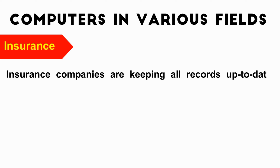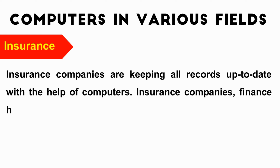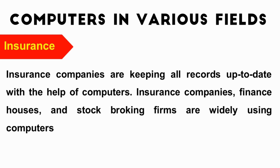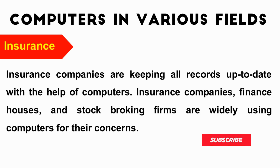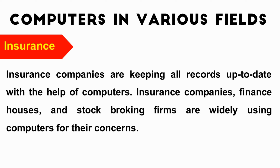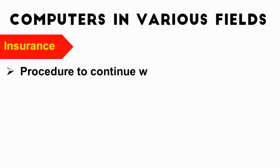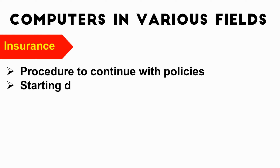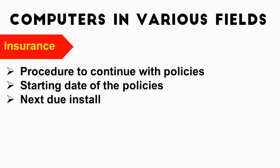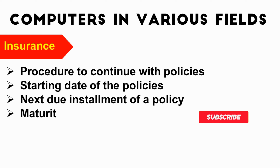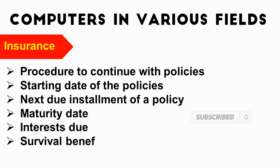Insurance companies are keeping all records up to date with the help of computers. Finance houses and stock-broking firms are widely using computers for their concerns. Insurance companies are maintaining a database of all clients with information showing procedure to continue with policies, starting date of the policies, next due installment of a policy, maturity date, interest due, survival benefits, and bonus.